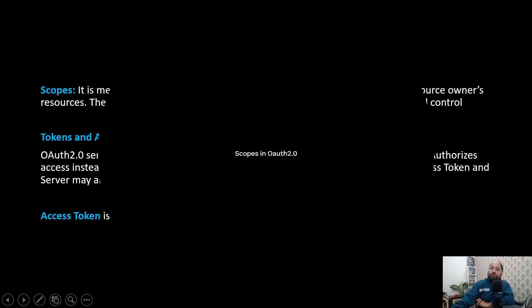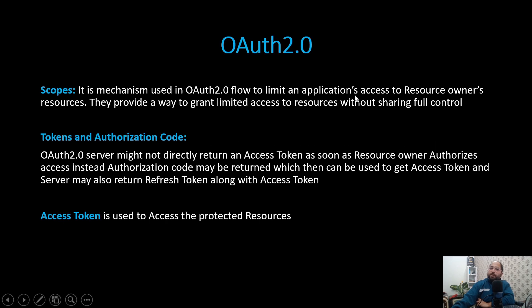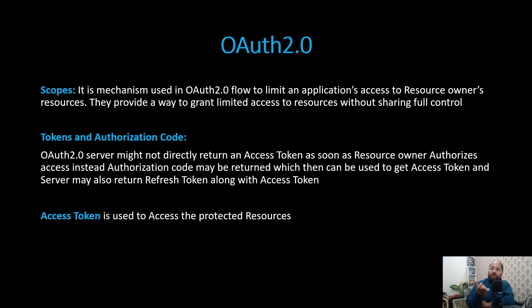Now let us discuss about scopes. Scopes are a mechanism used in OAuth 2.0 flow to limit an application's access to the resource owner's resources. As we discussed, we give limited access to the third-party application — it might not need the entire control. It may need first name, last name, email ID, or some other information. It may not need all the information. So how is this possible? It is possible with the help of scopes.